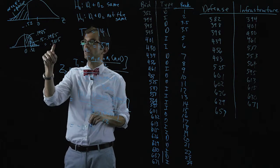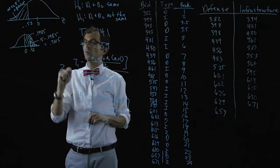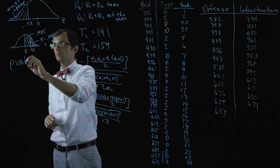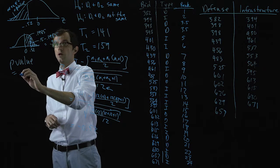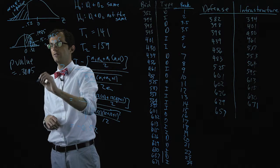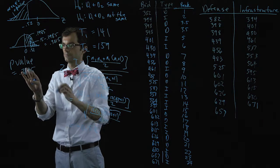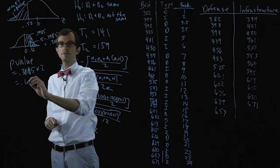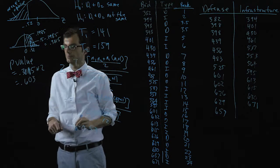So this area, point three zero one five multiplied by two gives us the p-value. Point three zero one five multiplied by two is point six zero three.